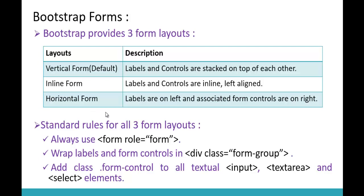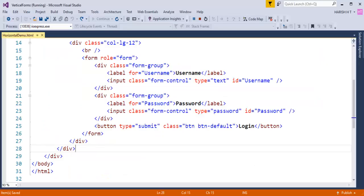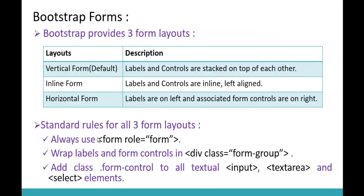I have already followed the required rules in my code: to the form tag I've applied the form class, labels are wrapped in the class called form-group, and to the input elements I've added the class called form-control. Now it's time to convert our vertical form into a horizontal form.